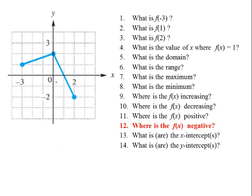Where is f of x negative? That's in quadrants 3 and 4 — anything below the x-axis will be negative. So that's from x equals 1 to positive 2. When x is positive 2, y is negative 2, which is negative, so it equals. But when x is 1, y was 0, so this is not an equal to. In set notation: parenthesis 1 comma 2 bracket.